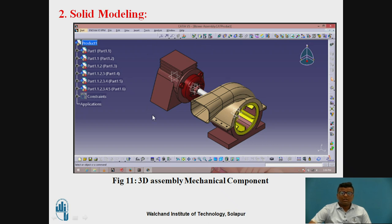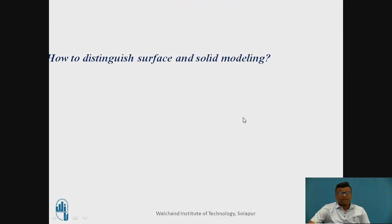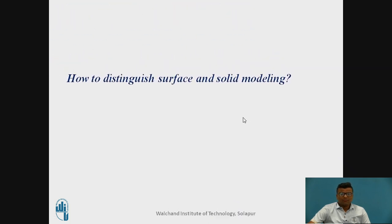So solid modeling is very important. If you want to develop any solid model, you can create it in CATIA or SolidWorks with the help of different tools or icons like pad, pocket, or shaft. Think about the question: how do you distinguish between surface and solid modeling?